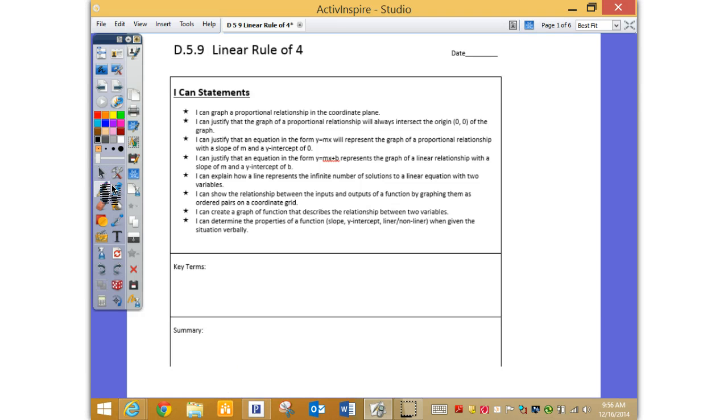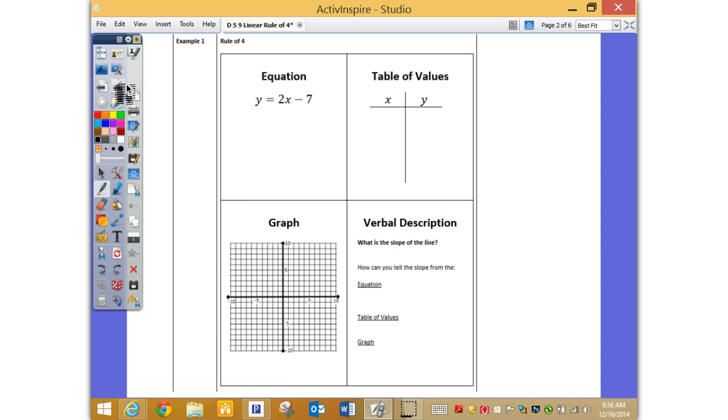All right, 5.9 linear rule of 4. These are actually pretty easy, pretty fun. You can see the correlation of what you get when, let's go right to the examples.